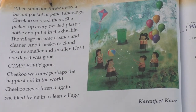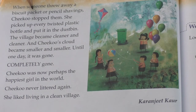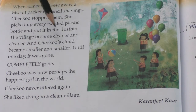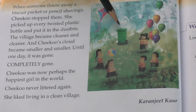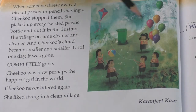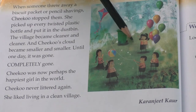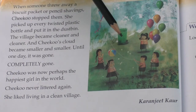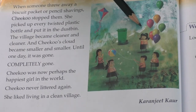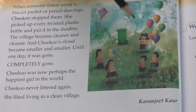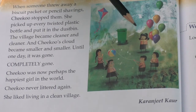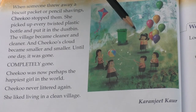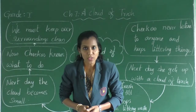What would Chiku do from now onwards? Now whenever someone threw any trash away, she stopped them. She started picking up all the waste she could see and put it in the dustbin. The village became cleaner and cleaner, and her cloud of trash became smaller and smaller until one day it was completely gone. Chiku was now the happiest girl in the world. She had stopped littering and liked to live in a clean village.